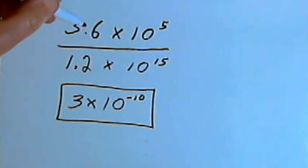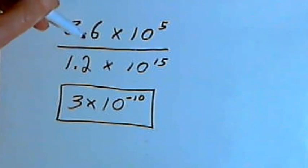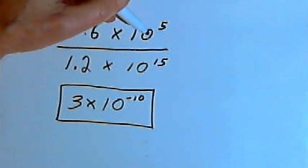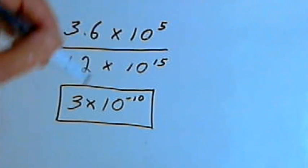Once again, I took the first part of each of those scientific notation numbers, the 3.6 and the 1.2, and divided that. And then I divided the power of 10 part to get my answer.